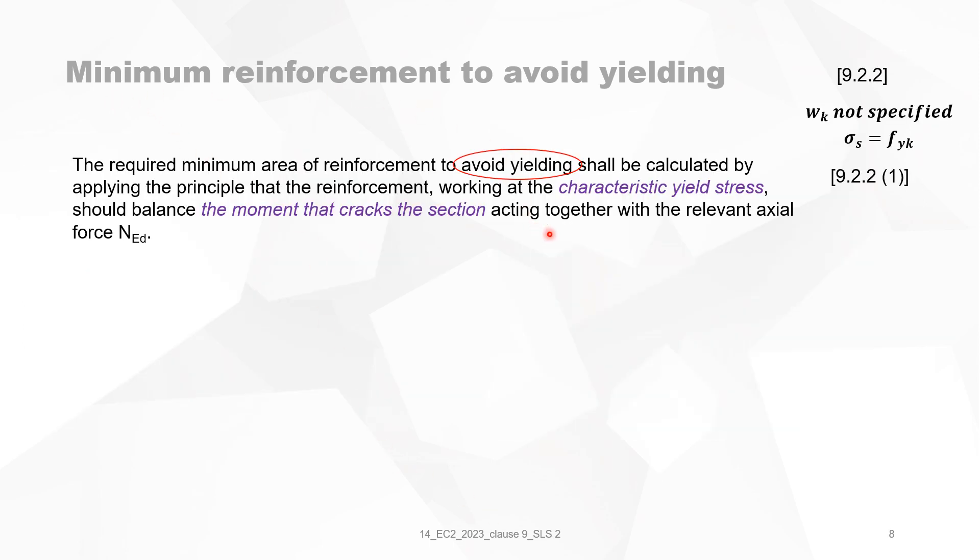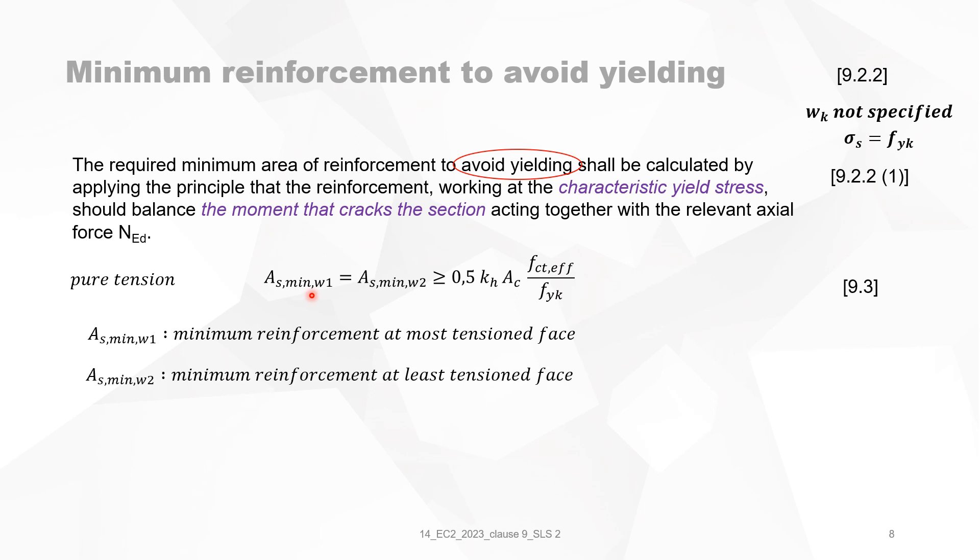Minimum reinforcement to avoid yielding. We are in this case. We know that 9.2.2(1) is this text. And we have seen pure bending. And now we will look at pure tension. The formula 9.3 is given like it is on the slide. And you see immediately that the minimum reinforcement at W1, which is at the most tension face, is equal to the minimum reinforcement at the least tension face. Because it's pure tension. So the whole section is in tension. So those two minimum reinforcements are equal. And are given by this formula. k_h again is the effect of non-uniform self-equilibrating stresses due to shrinkage and hydration heat. We have seen that f_ct,eff can be taken as f_ctm.